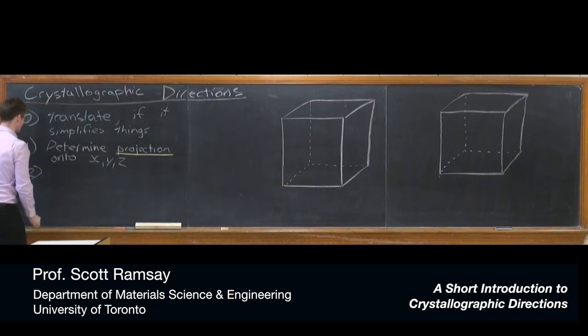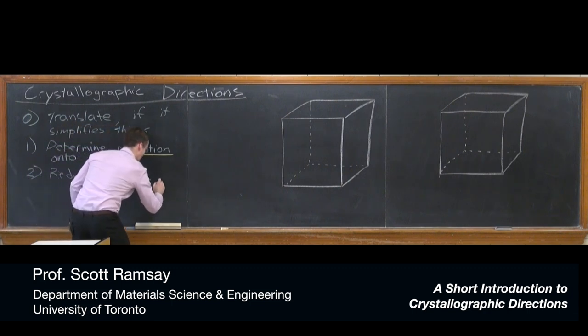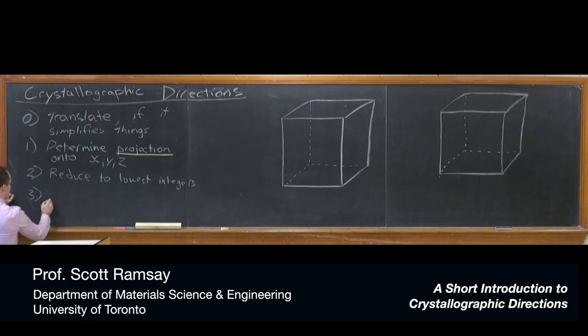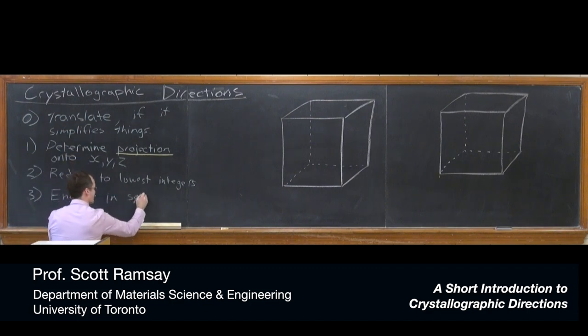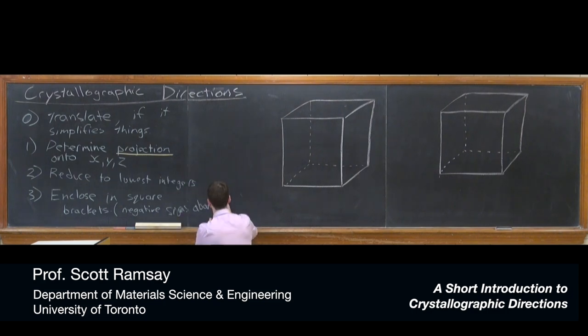Next step is reduce to lowest integer values. And then finally, we enclose in square brackets, plus do a little bit of housekeeping, which means negative signs are moved above and no commas.